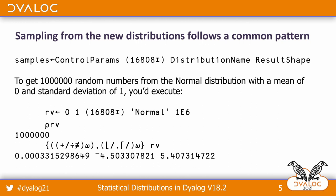The way you access these distributions is through the new I-beam 16808. The typical pattern is you provide the control parameters for the particular distribution as the left argument, and the right argument has two things in it: the name of the distribution you want, and the shape of the result.